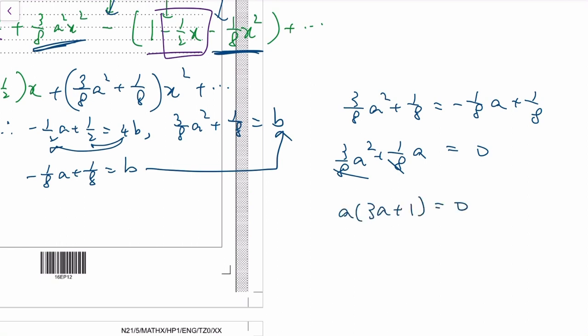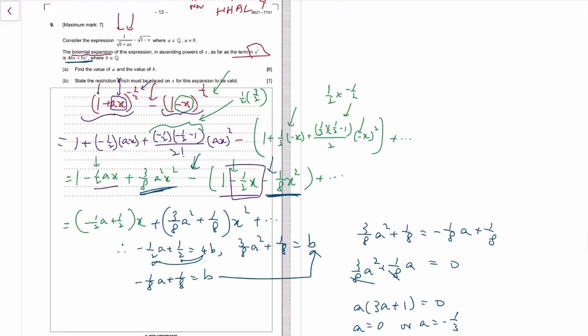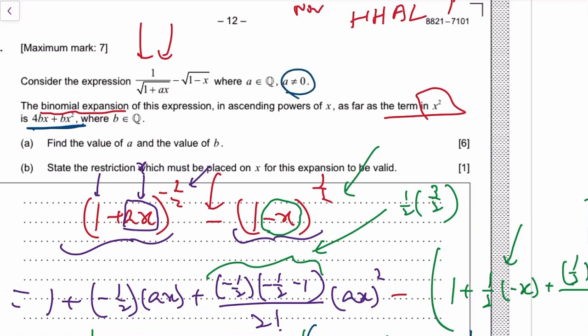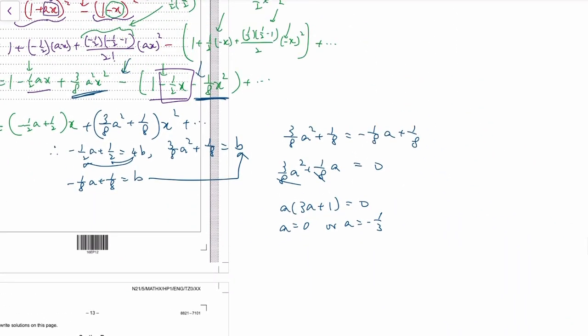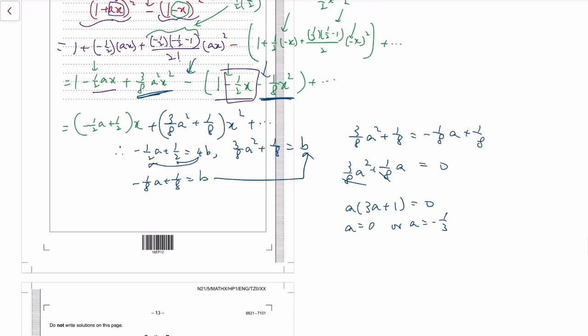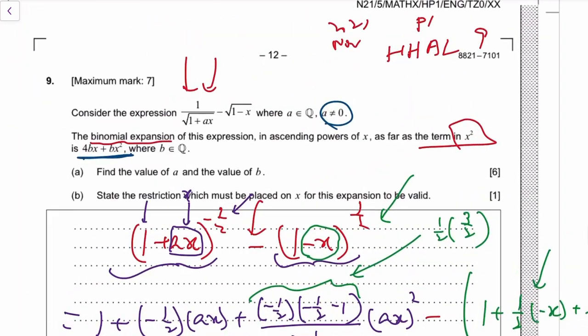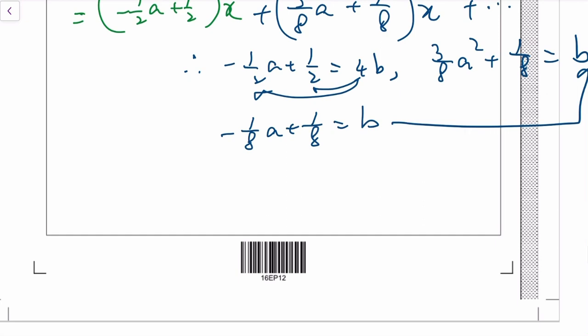So either a is 0 or a is negative 1 third. a probably should not be zero, yeah, a is not zero. So a is negative 1 third. Once we know a they also ask for b.